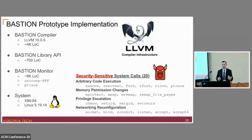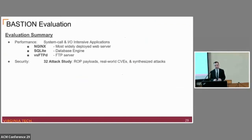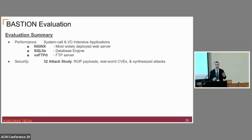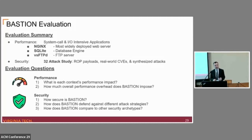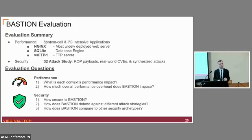Recall the distinction between arbitrary system calls and security-sensitive system calls — we focused on four major categories of code reuse attacks; please see the paper for more details. For the performance evaluation, we tested against heavy system call applications like NGINX, the most widely deployed web server. From the security front, we conducted a 32-attack study comprised of various ROP payloads, real-world CVEs, and synthesized attacks from the security literature. The evaluation questions are: how does each individual context impact performance, how does Bastion's overall performance look, and how does Bastion stack up against various attack scenarios?